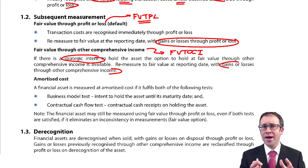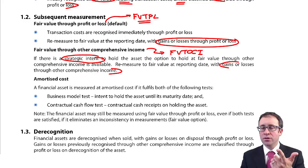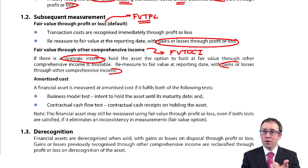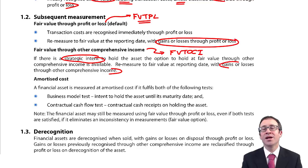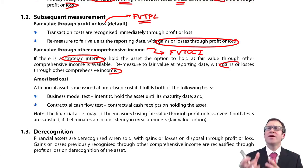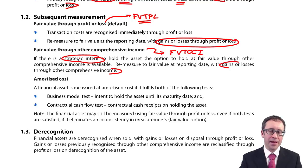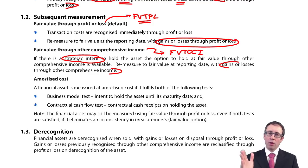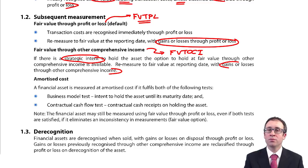So, for investments in equity shares: the default is fair value through profit or loss; you can elect fair value through OCI if you have strategic intent. Transaction costs on FVTPL go through profit or loss, whereas transaction costs on FVOCI are added on top of the initial amount recognised. Also note that any dividends received still go through profit or loss regardless — dividends received on both FVTPL and FVOCI investments go to profit or loss.